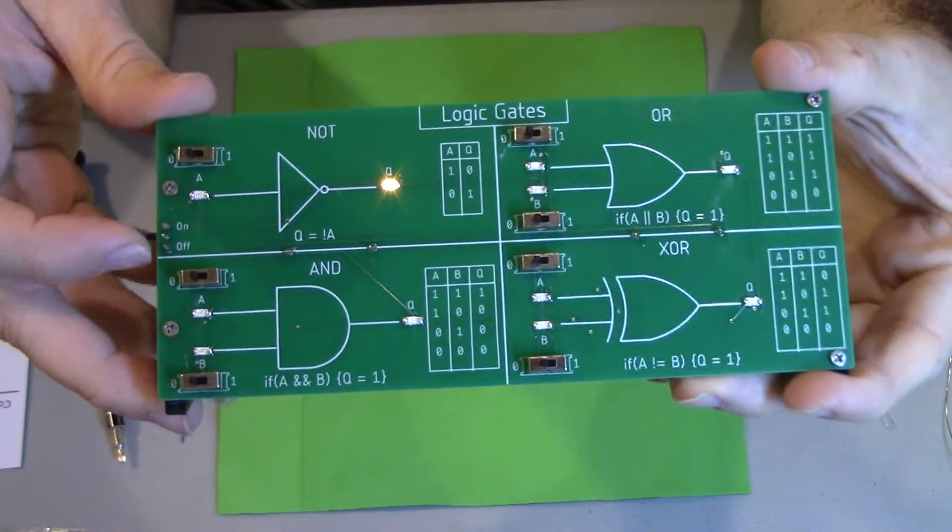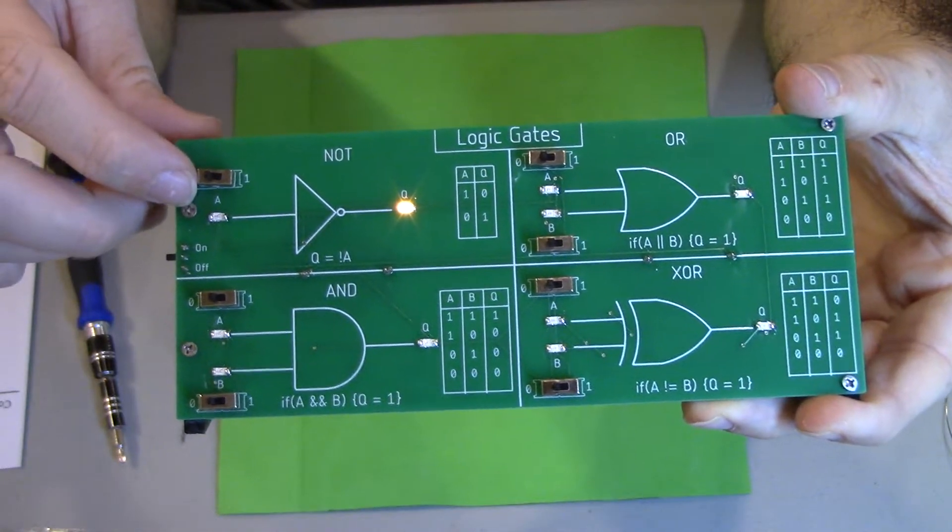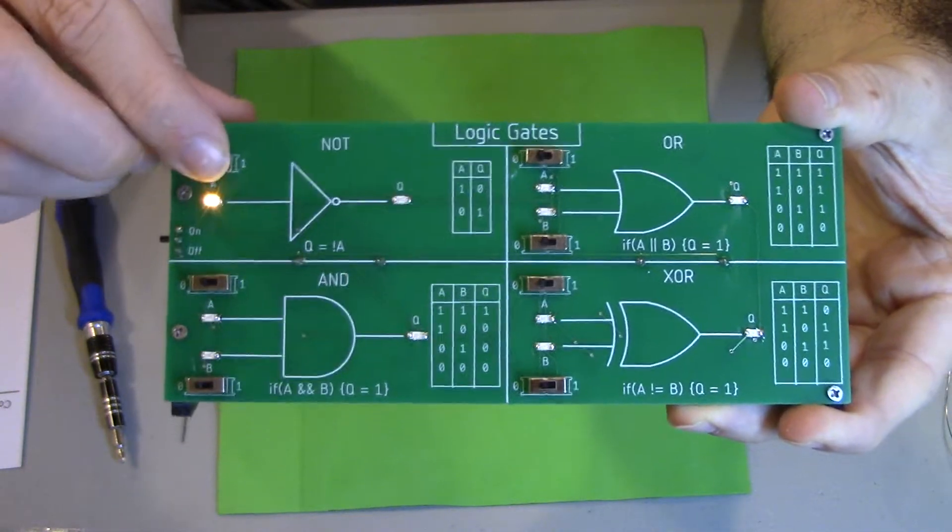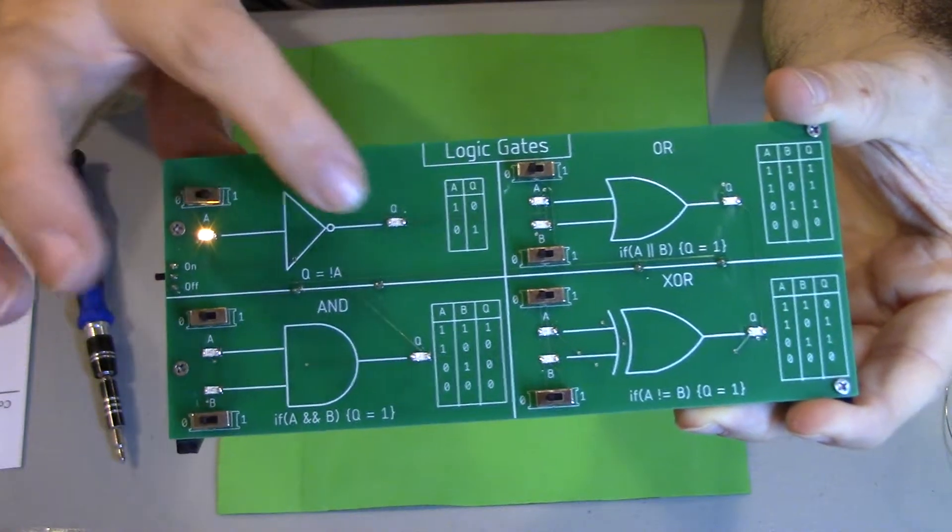We have our NOT gate. When an input is not coming in here, there will be an output current. But when we put input current in here, the output is negated. We have no current.